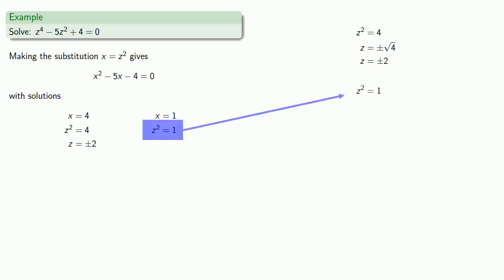Likewise, since z squared equals 1, we know that z is plus or minus the square root of 1, which is plus or minus 1.